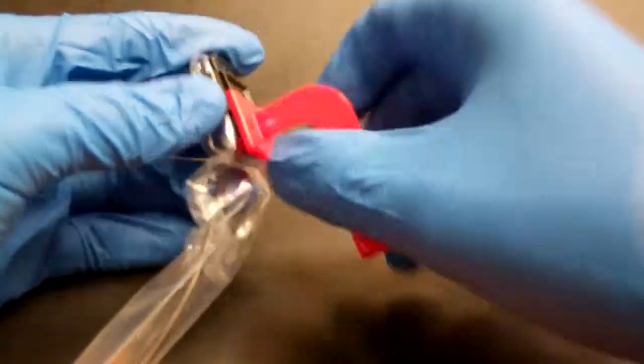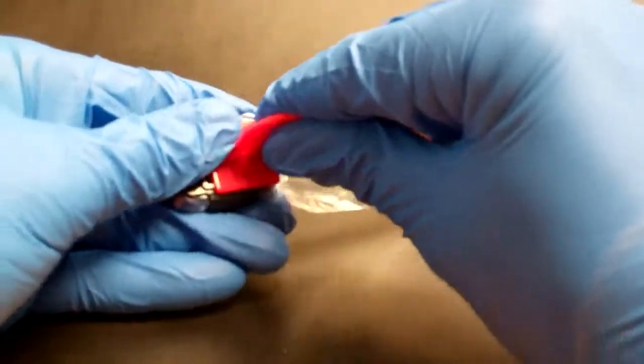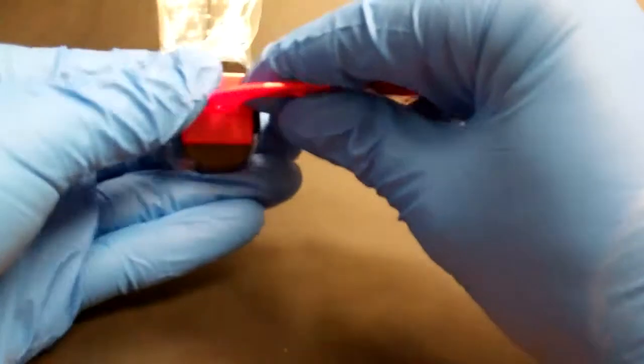And again, with the bitewings, if we were doing a horizontal bitewing, we would just attach our bitewing bite piece like so. If we wanted to do a vertical bitewing, attach it from the side.